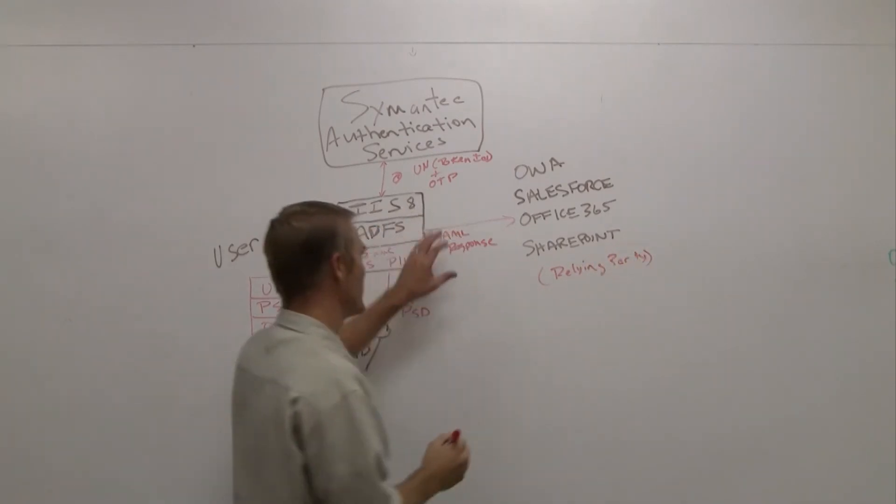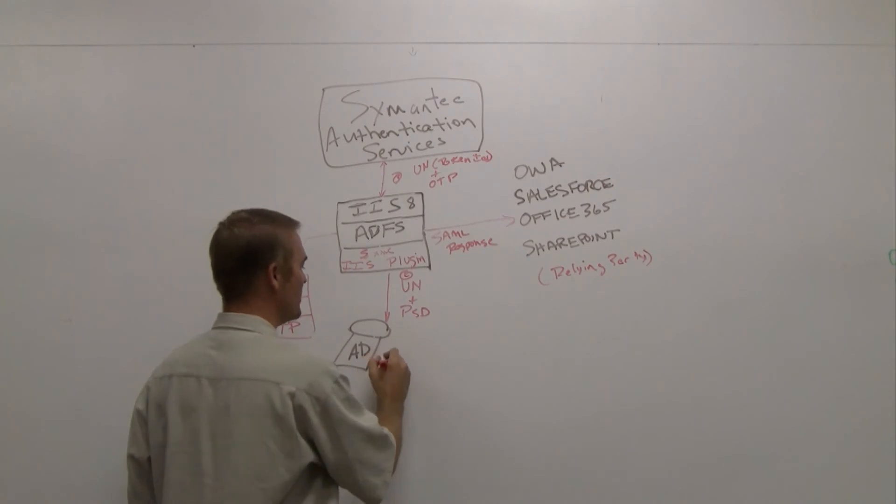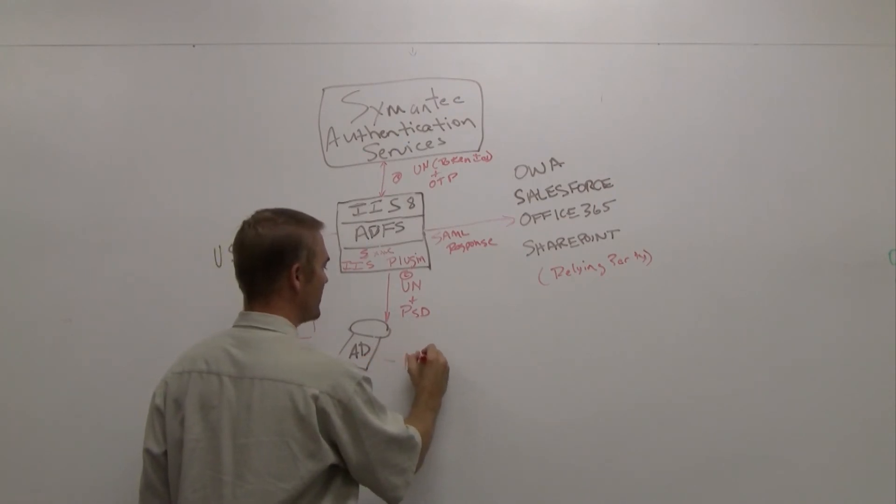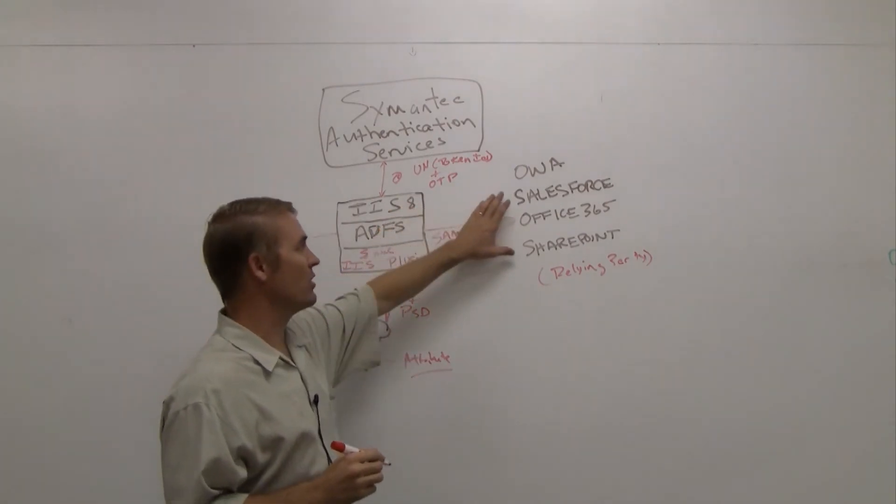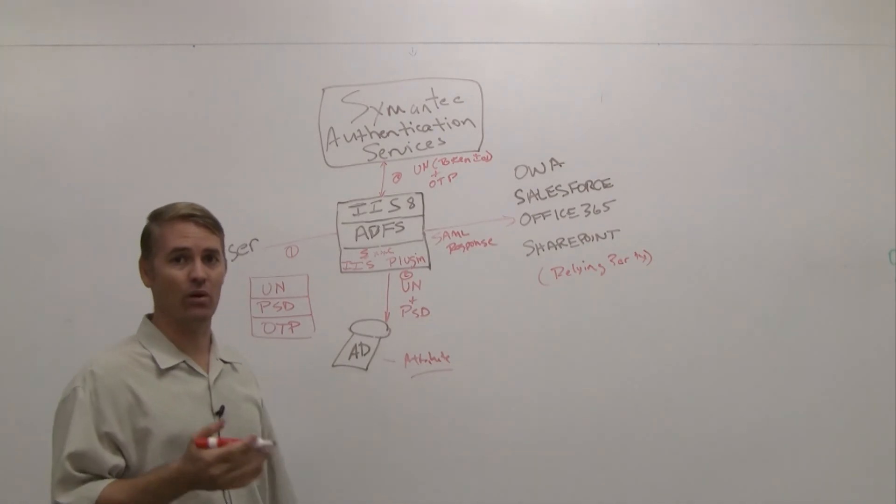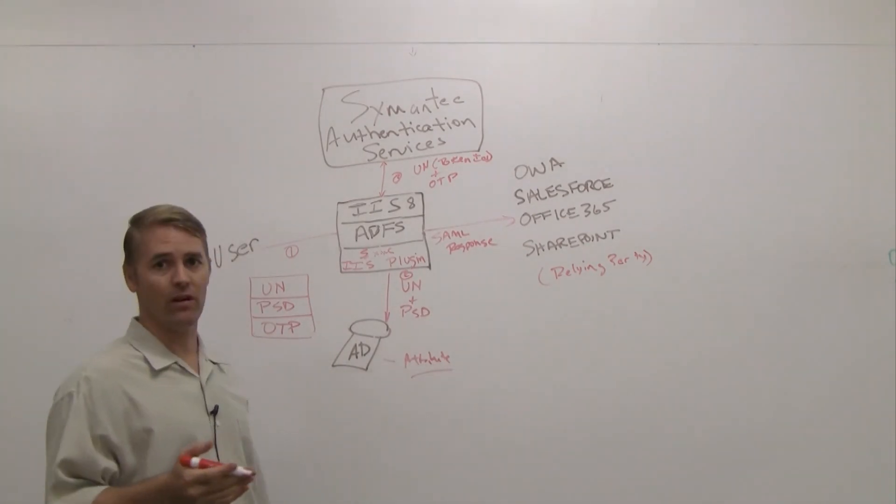The way that SAML response works is it could be pulling an attribute out of Active Directory. Based on that attribute passed over successfully to the reliant party, they would either accept or deny authentication from this SAML query.